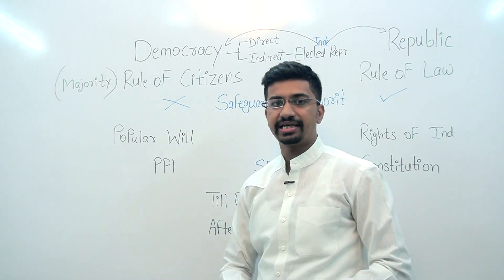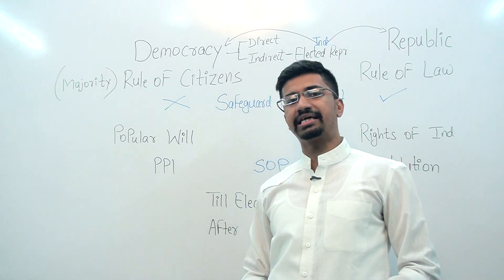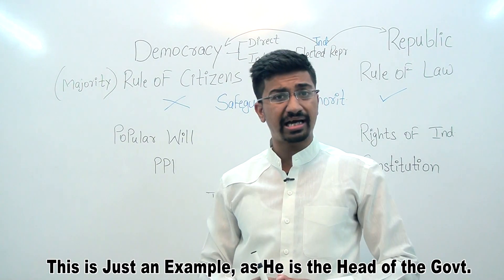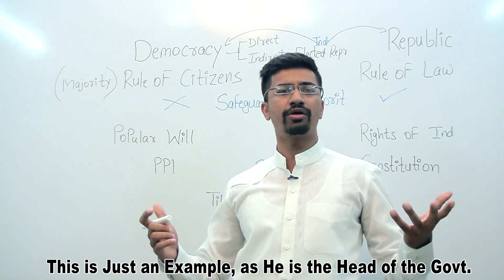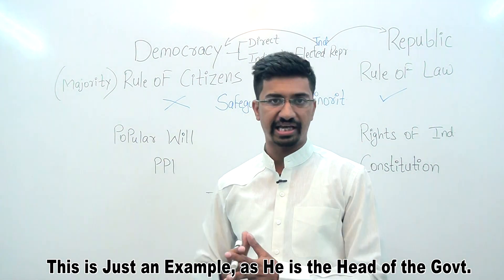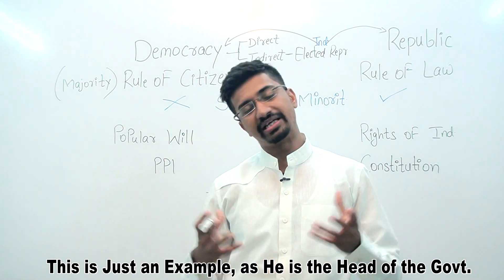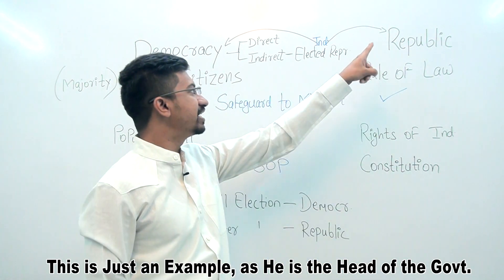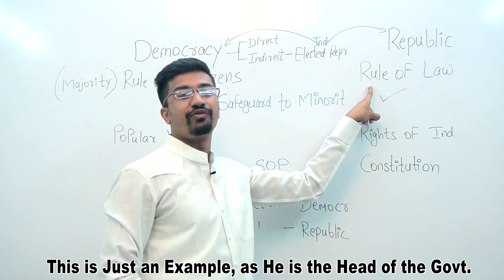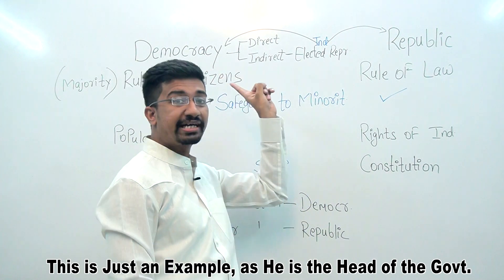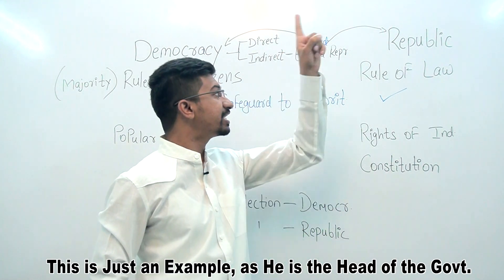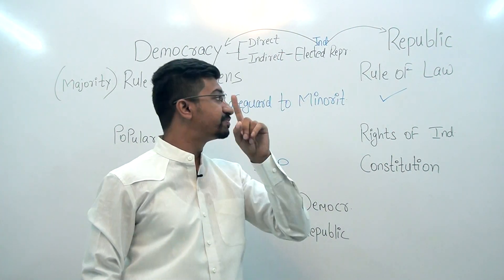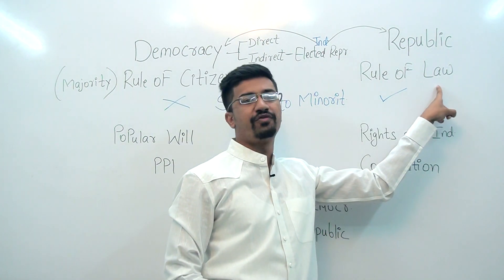Let's take an example. Suppose Narendra Modi ji stands up one day and decides he doesn't eat non-veg and therefore no one in the entire country will eat non-veg. Is that possible? Yes — in a pure democracy it could be — but we have rule of law here, because we are not only democratic but also a republic. And the republican form of government is based wholly on the rule of law.